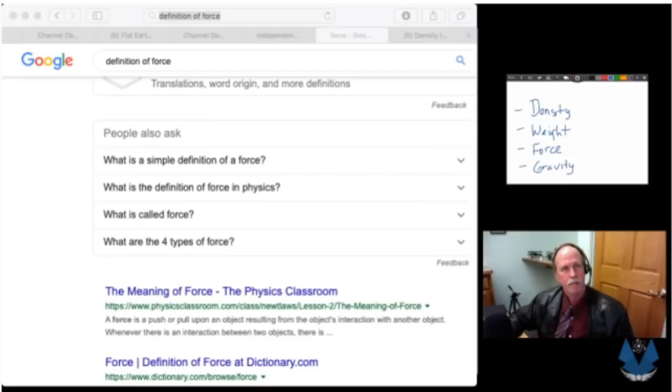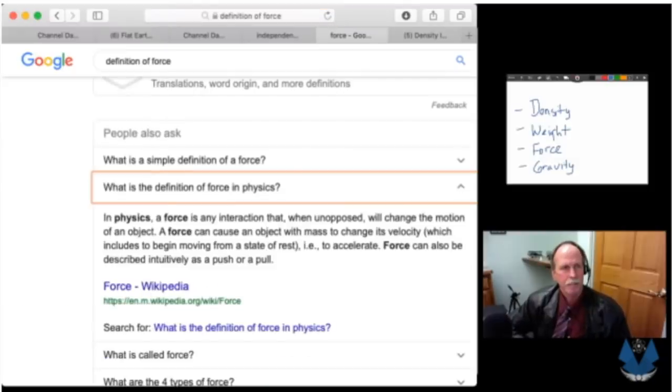What about this one? What is the definition of a force in physics? Let's see what that says. In physics a force is any interaction that when unopposed will change the motion of an object. A force can cause an object with mass to change its velocity, which includes begin moving from a state of rest, i.e. to accelerate. Force can also be described intuitively as a push or a pull.